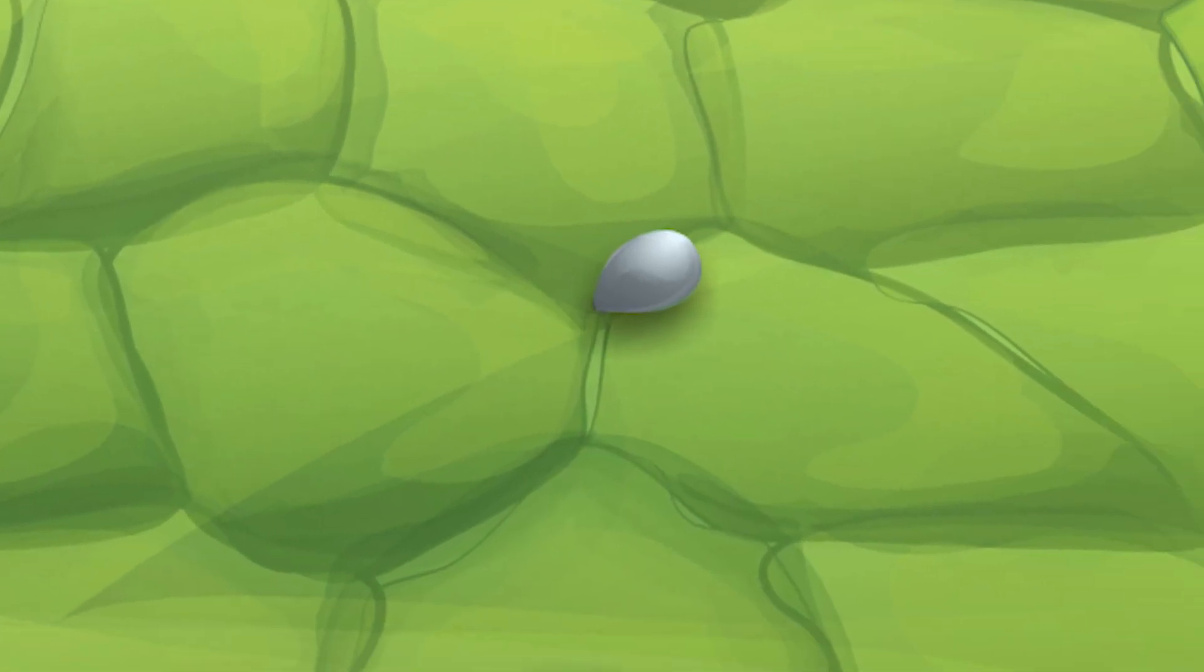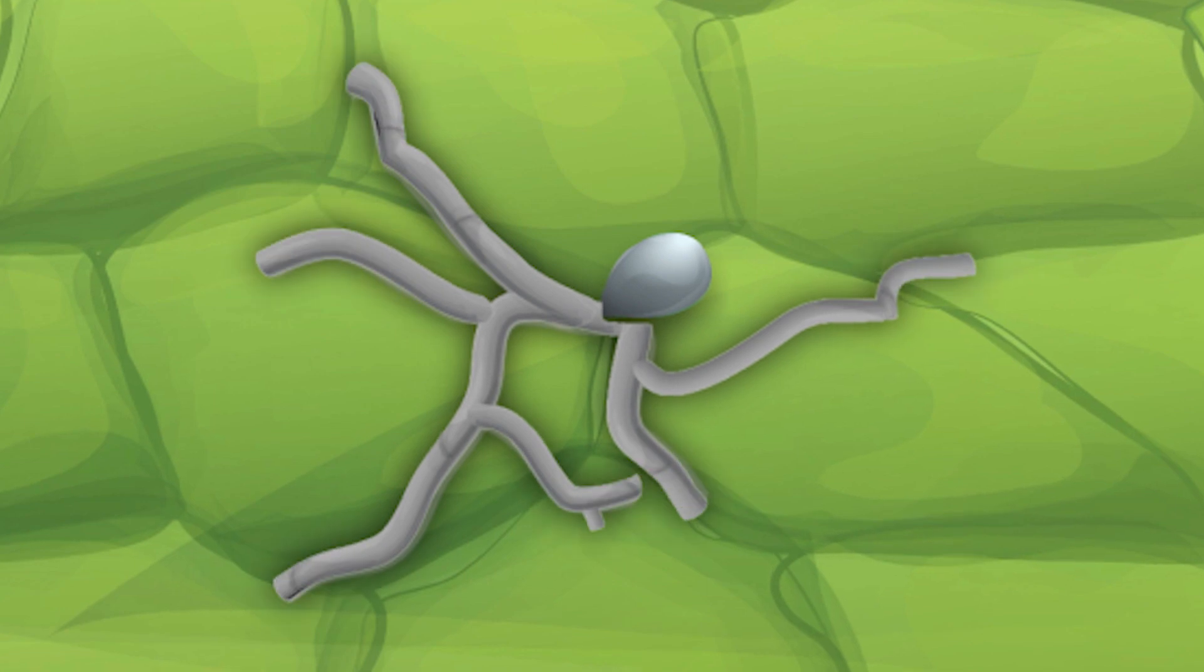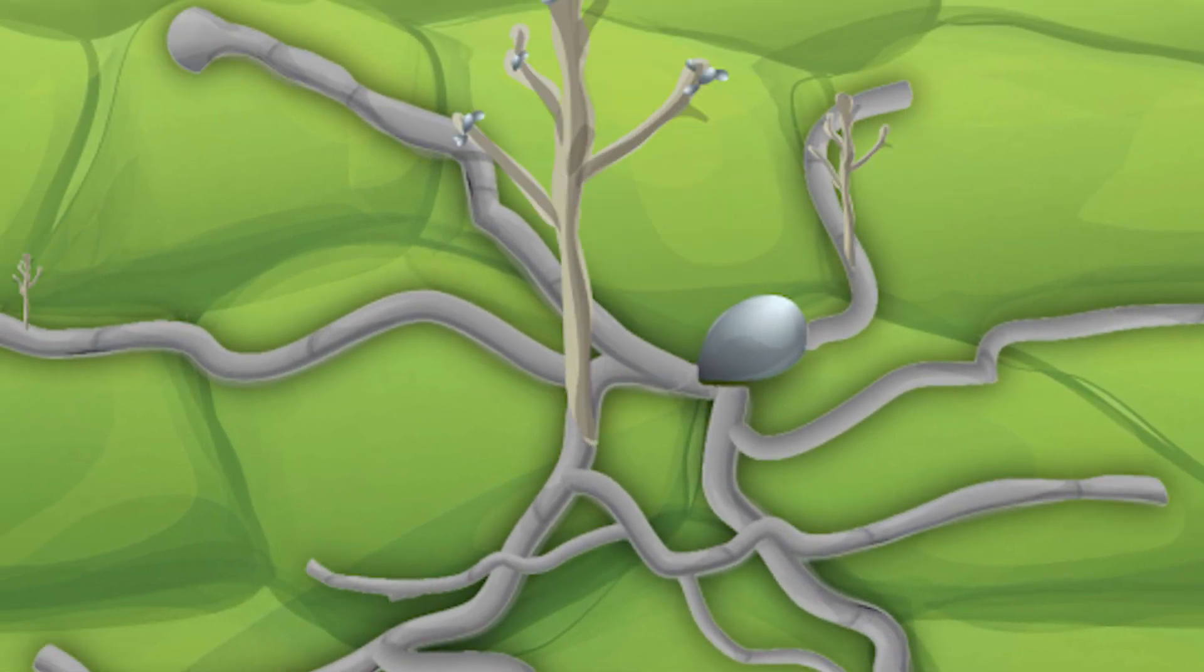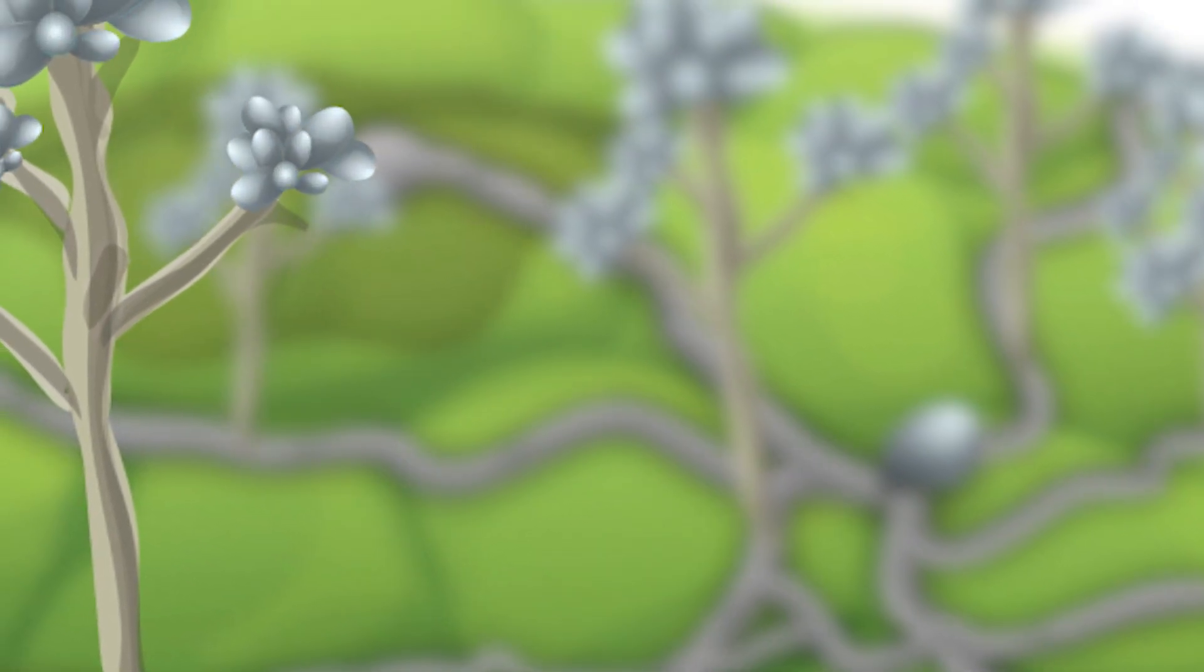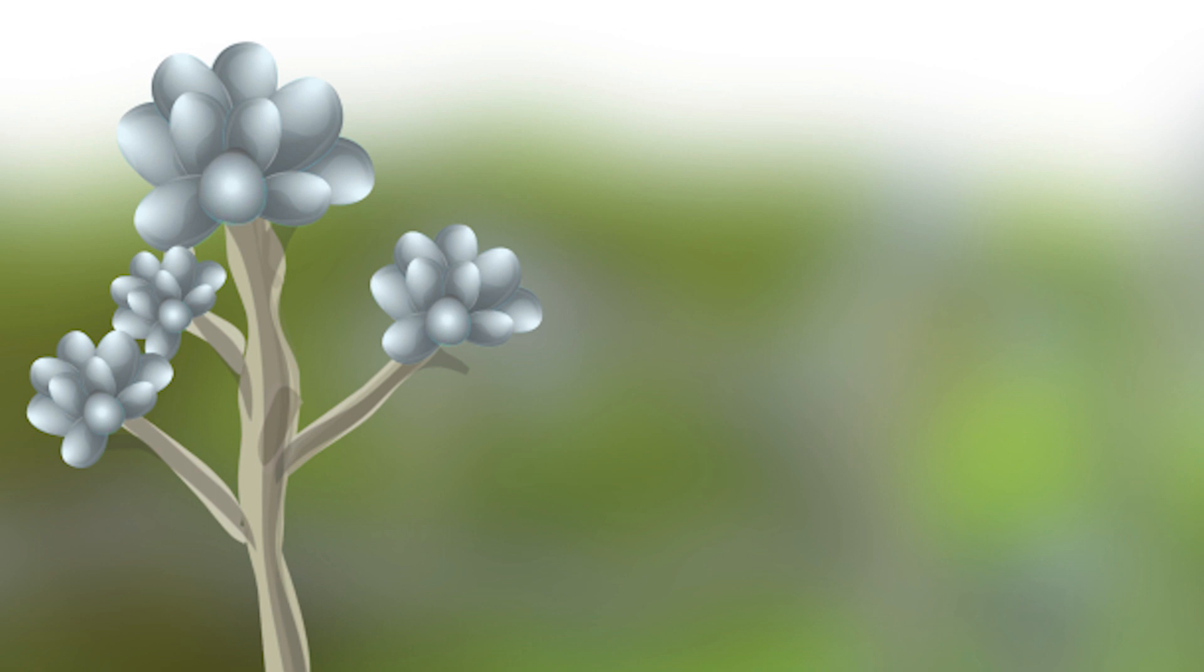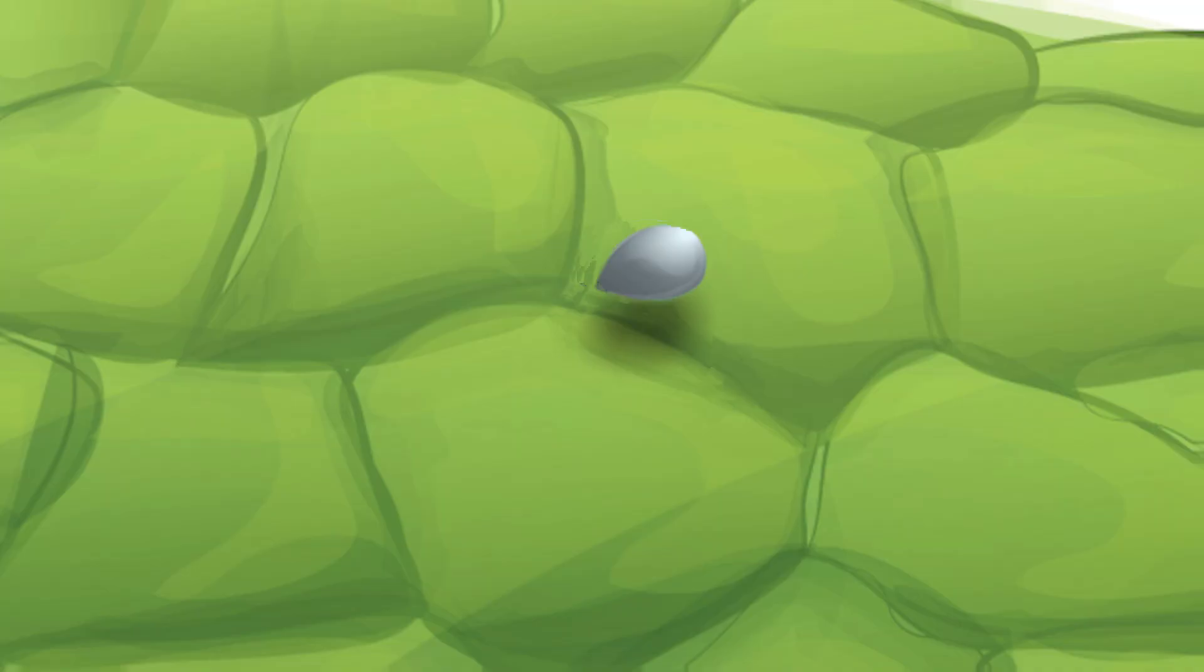Fungal spores are everywhere. They can be easily carried by wind or rain to susceptible plants and infect. Spores produced on infected plants spread to other leaves and plants, continuing the cycle of disease.